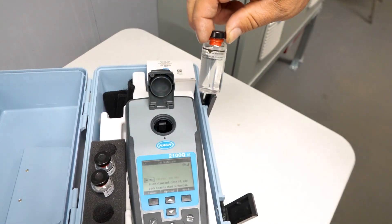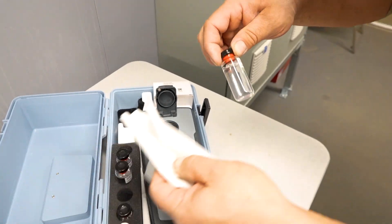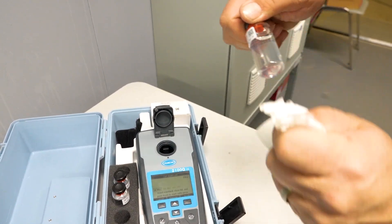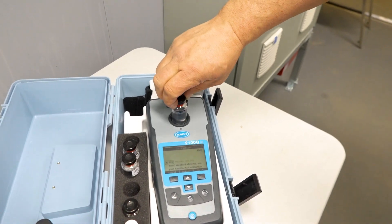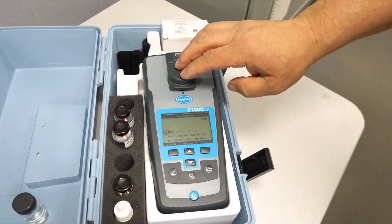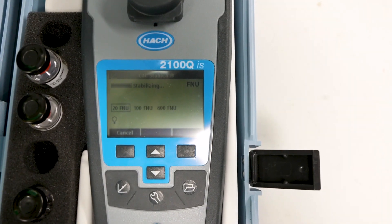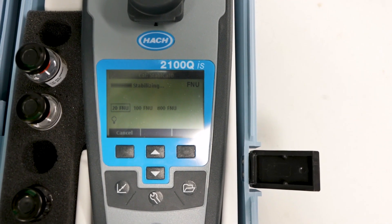Once it's done that, you've got to polish your cell, put it in arrow to arrow, close your lid, and hit read. And then once it's done stabilizing, it'll ask for the next cell.